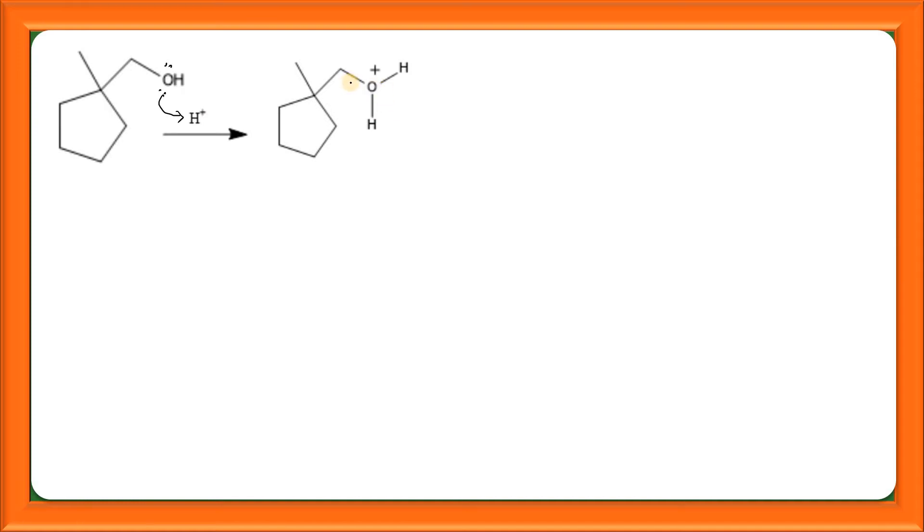It leads to the formation of this protonated alcohol. Then this leaves as a water molecule, formation of carbocation will take place here. But students remember that this carbocation is not stable because we all know that order of stability of carbocation is tertiary is more than secondary is more than primary.